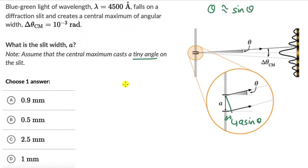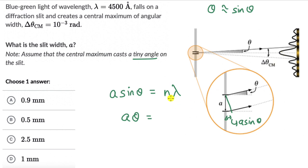We know the condition for minima: a·sinθ = n·λ. Using the small angle approximation, this becomes a·θ = n·λ. For the first minimum, n = 1, so a·θ = λ. This means the slit width a = λ / θ.